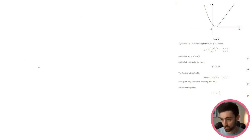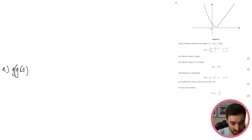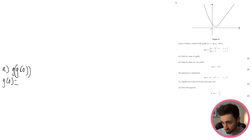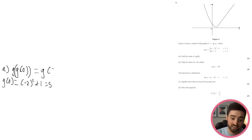Question 6: figure 4 shows y = g(x), where g(x) is a quadratic for x ≤ 2 and a linear function for x > 2. Find g(g(0)). Work from the inside out. g(0): since 0 ≤ 2, use the quadratic. g(0) = (0 − 2)² + 1 = 4 + 1 = 5. So g(g(0)) = g(5).